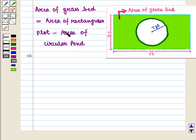Now we know that area of rectangular plot will be equal to length times width minus area of circular pond, and area of circular pond will be given by π times r squared, i.e., radius squared.